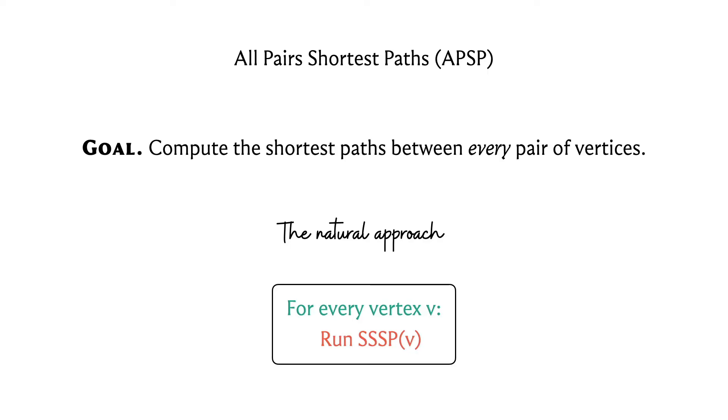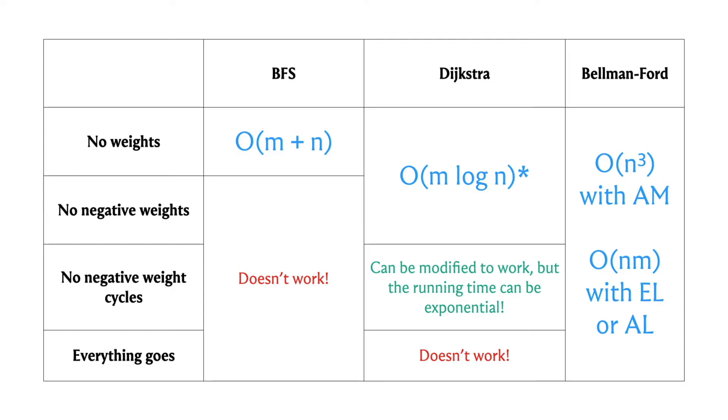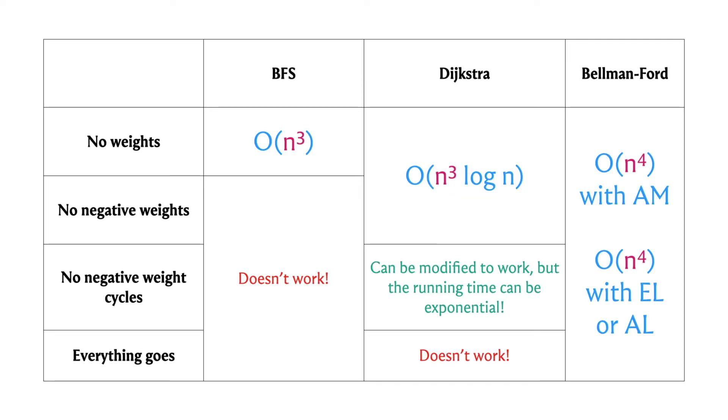Let's take a look at the SSSP algorithms we have seen so far and understand what would be the running time of the APSP algorithm if we were to simply run these SSSP algorithms n times. To obtain these running times we simply add a multiplicative factor of n to the existing running times. When the number of edges is roughly n squared in a dense graph, it's only when we have no weights that we get an n cubed running time by running BFS n times, but in everything else we have something worse than n cubed.